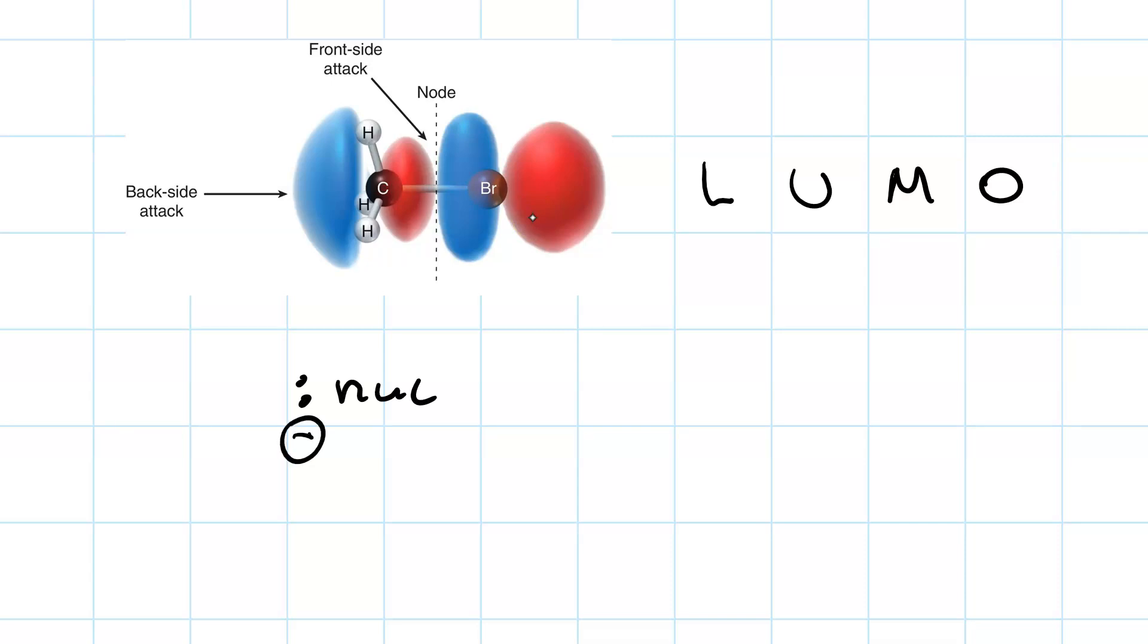We can't put the electrons, for instance, in an occupied orbital, like the highest occupied molecular orbital. It's got to go in the LUMO. Furthermore, we have to put these electrons somewhere where there's actually electron density, one of the lobes. We cannot put it in a node where there's no electron density.